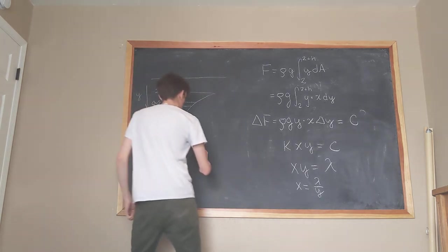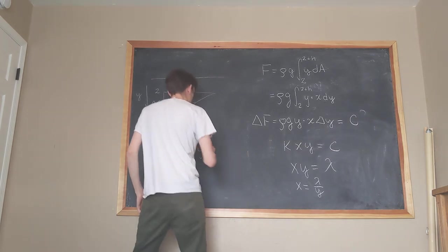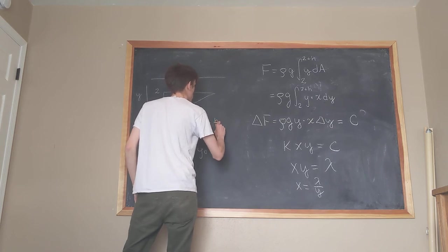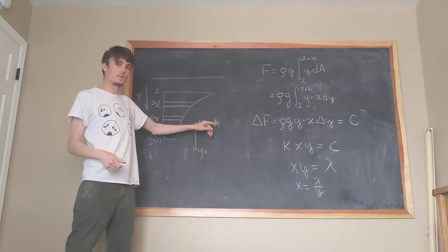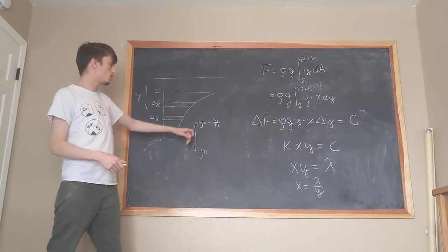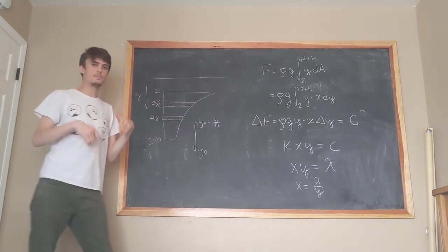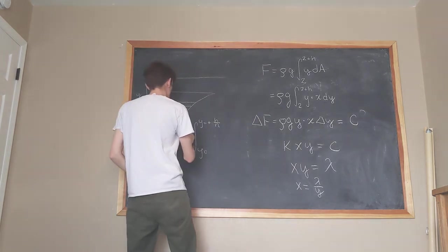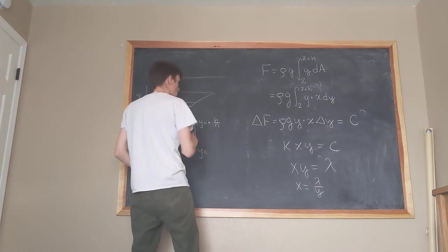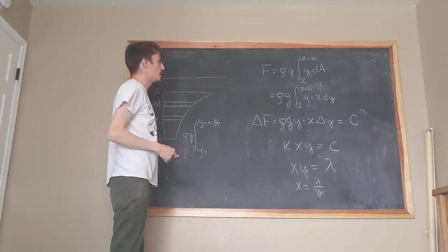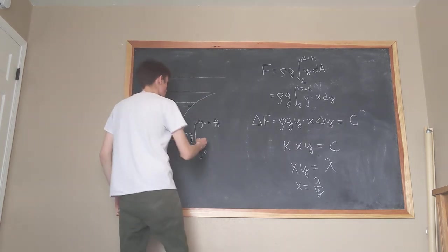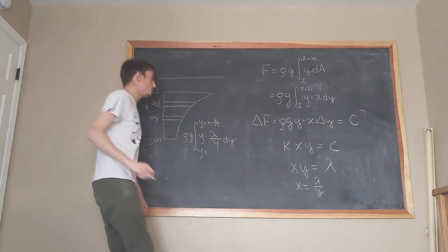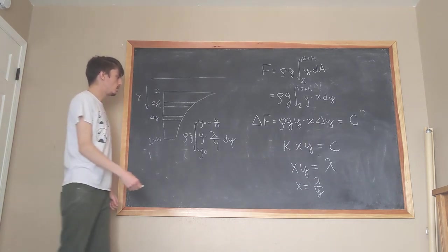So from y₀, we're going to start from some generic y up to y₀ plus h over n, because we're breaking this into n equal strips. So we're just going to do h over n, so the total height divided by one strip piece. And we're going to use this little formula here. We got ρ, we've got g, y times x times dy. So this is going to be y times λ over y times dy.